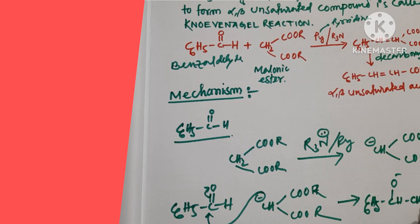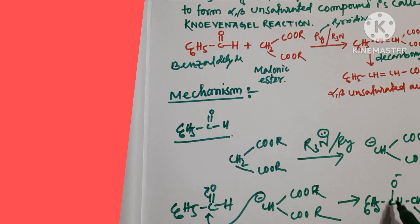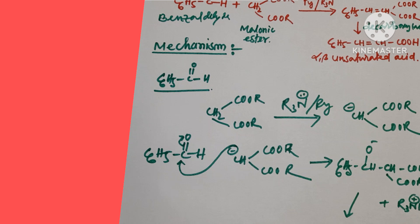After the nucleophilic attack we get: C6H5-C(O⁻)(H)-CH(COOEt)2. Then the protonated amine R3NH⁺ donates one proton — that means OH minus traps one proton from the tertiary amine. So the product we get is: C6H5-CH(OH)-CH(COOEt)2.